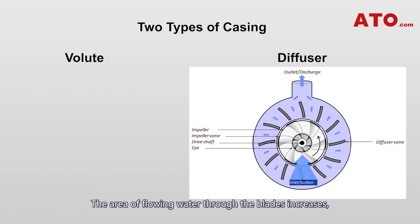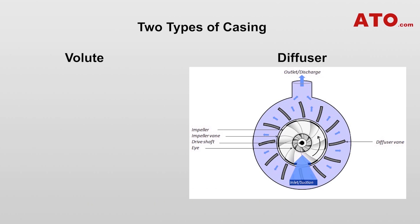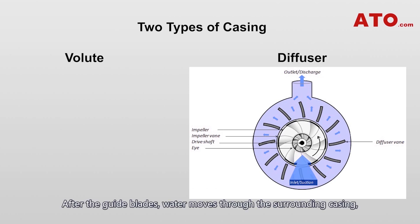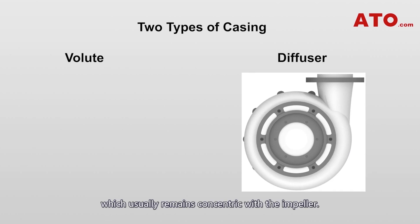The area of flowing water through the blades increases, decreasing the fluid velocity and increasing its pressure. After the guide blades, water moves through the surrounding casing, which usually remains concentric with the impeller.